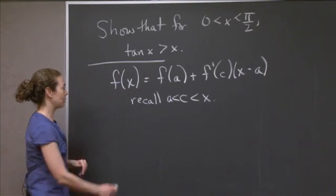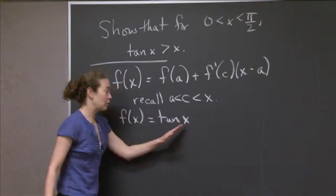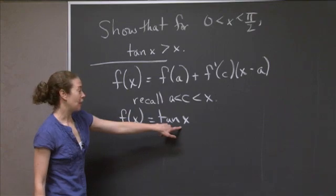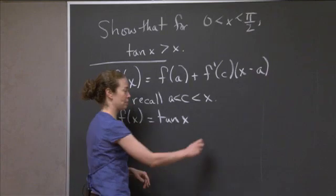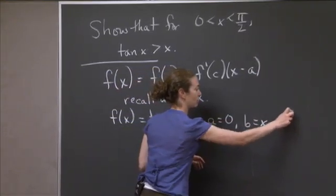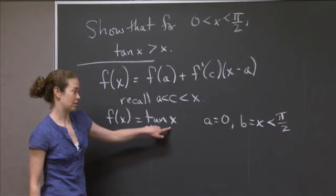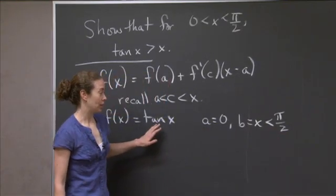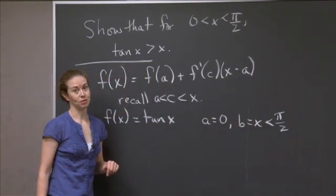What we need to check is, I'm going to consider f(x) = tan x. Does tan x satisfy the hypotheses of the mean value theorem on the region of interest? Our region of interest will always be a = 0 and b = x, which is less than π/2. It is true, tan x is continuous between 0 and any value less than π/2, and it's also differentiable there. So I can apply the mean value theorem to tan x.